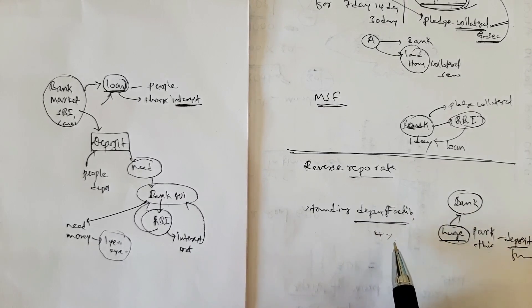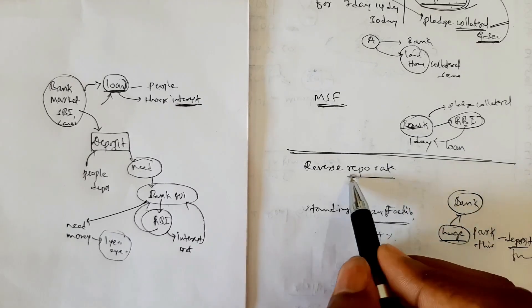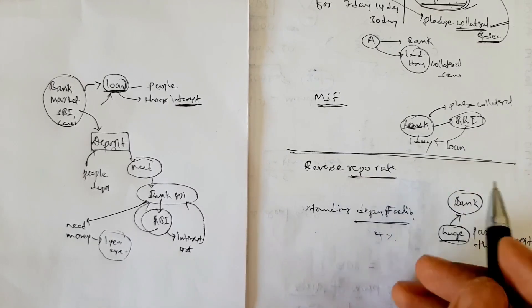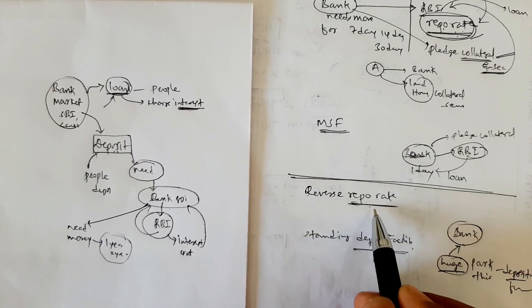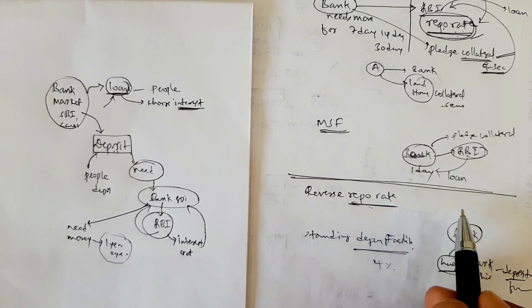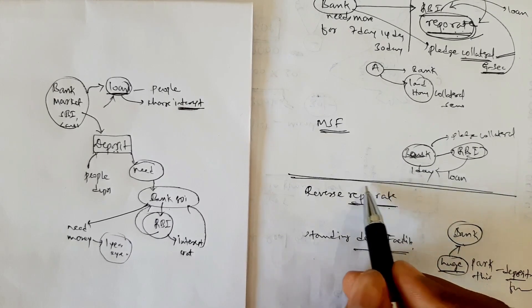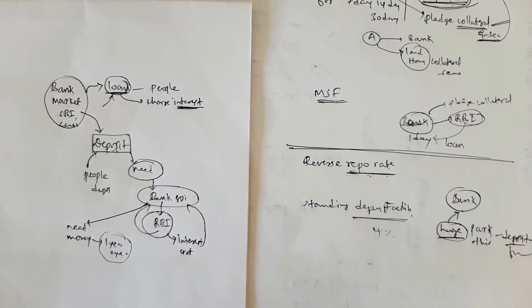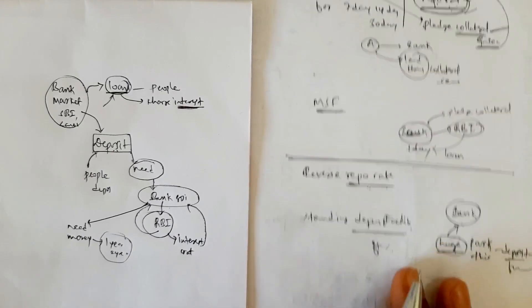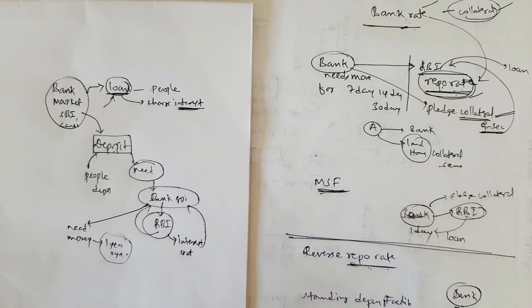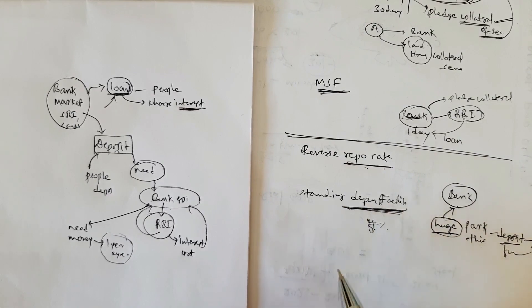The interest rates applicable are reverse repo rate and standing deposit facility — for example, around 3–4%, whatever RBI fixes. The difference between these two: reverse repo rate applies when the bank deposits funds for multiple days (like 7 or 14 days), and it earns interest at the reverse repo rate.